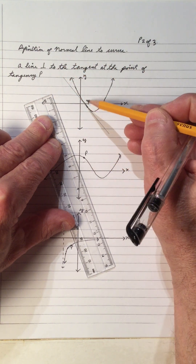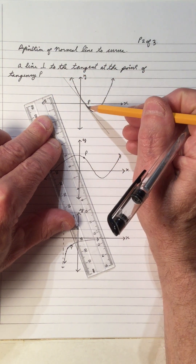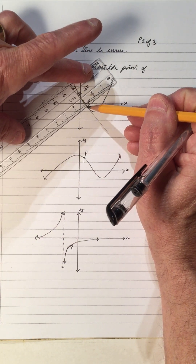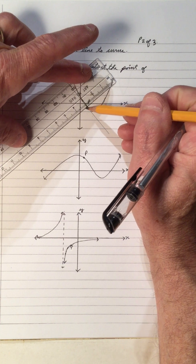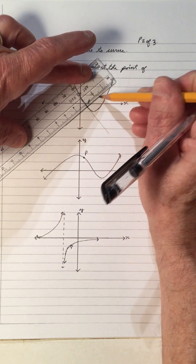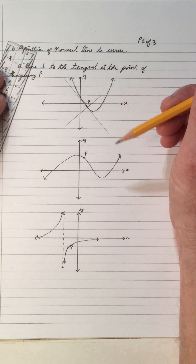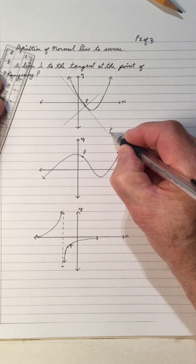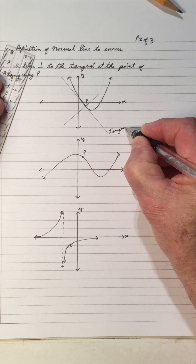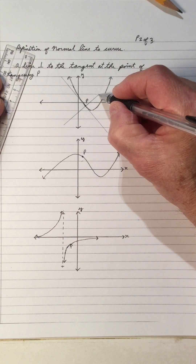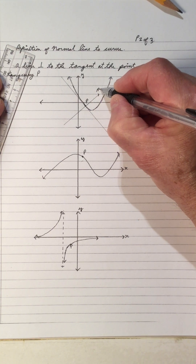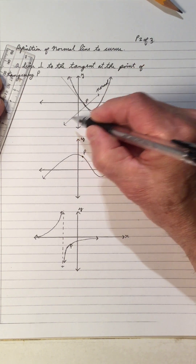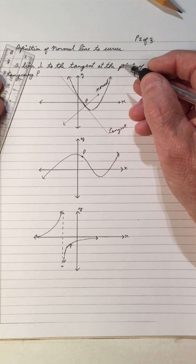It says the line perpendicular to the tangent at the point of tangency. This is the point of tangency, this is the tangent, so perpendicular to that would be at right angles. So, this is the tangent, and this is the normal. The normal is perpendicular to the tangent at the point of tangency.